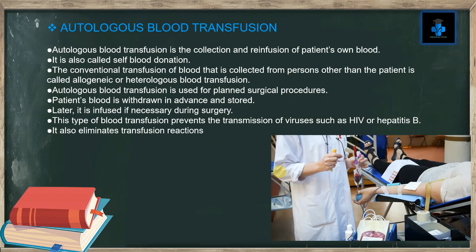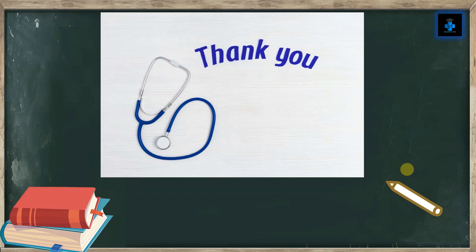Autologous blood transfusion is the collection and reinfusion of a patient's own blood. It is also called self-blood donation. The conventional transfusion of blood collected from persons other than the patient is called allogenic or heterologous blood transfusion. Autologous blood transfusion is used for planned surgical procedures — the patient's blood is withdrawn in advance, stored, and later infused if necessary during surgery. This type of transfusion prevents transmission of viruses such as HIV or hepatitis B, and also eliminates transfusion reactions.